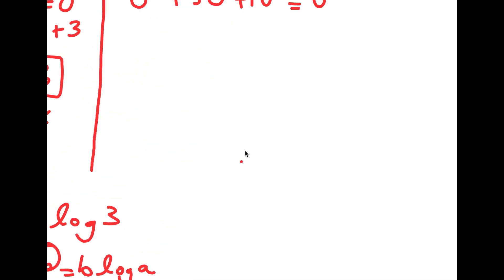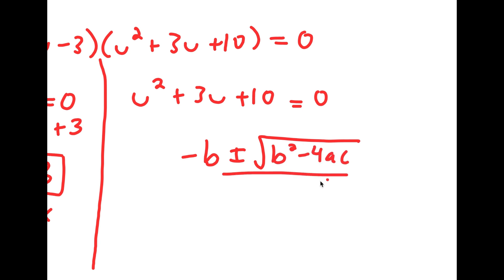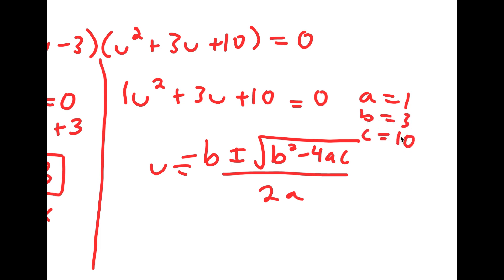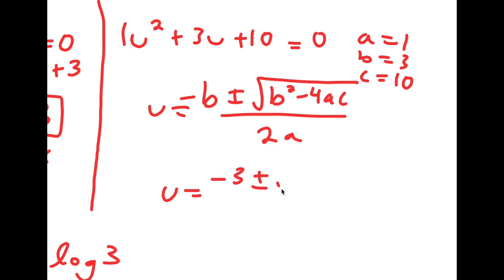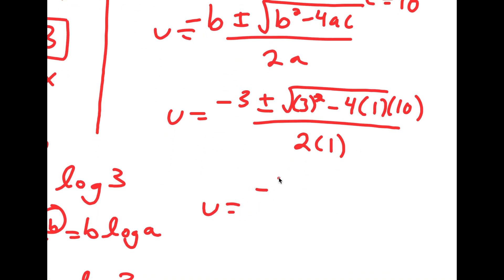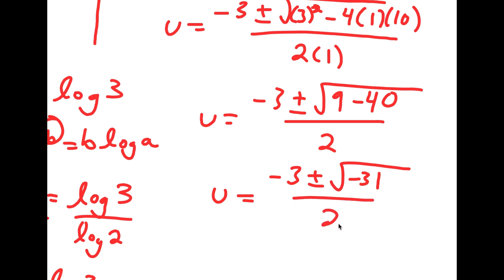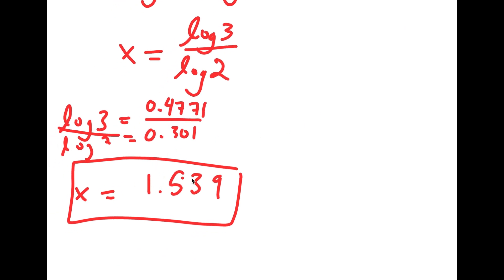Going back, we have u squared plus 3u plus 10 equals 0. Using the quadratic formula — negative b plus or minus the square root of b squared minus 4ac all over 2a — with a equals 1, b equals 3, and c equals 10, I get u equals negative 3 plus or minus the square root of 9 minus 40 all over 2, which is negative 3 plus or minus the square root of negative 31 over 2. Since the square root of negative 31 is not a real number, this gives no real solutions. Therefore, my only real solution is x is equal to approximately 1.539.